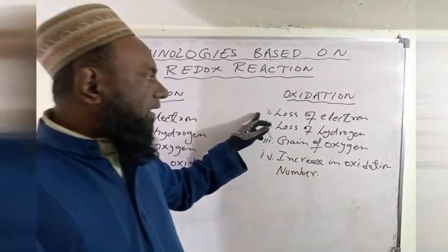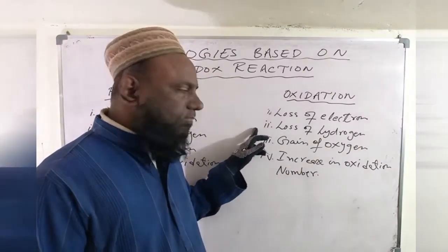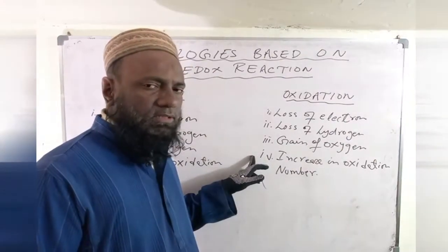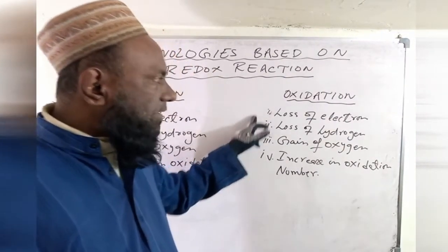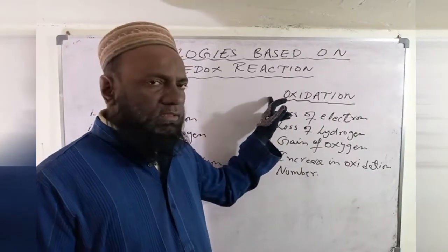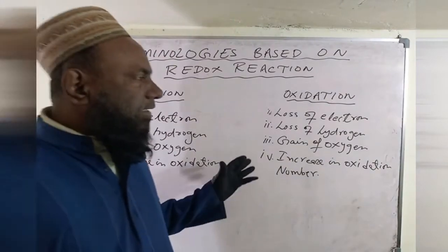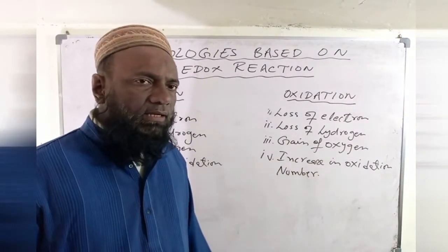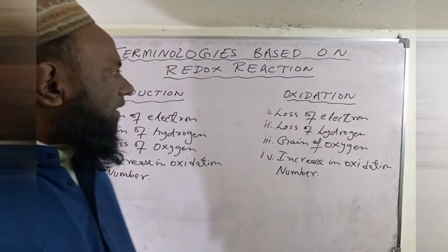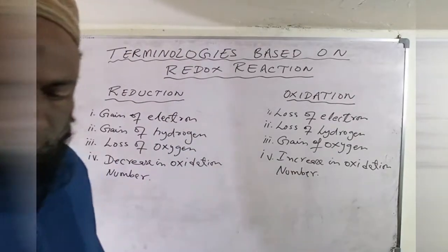In oxidation: loss of electron, loss of hydrogen, gain of oxygen, and increase in oxidation number. If any one of these four processes is occurring, it will fall under the category of oxidation. Now we will discuss the particular definition — where oxidation takes place and where reduction takes place.